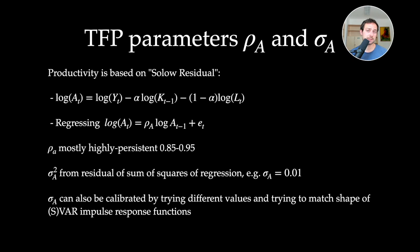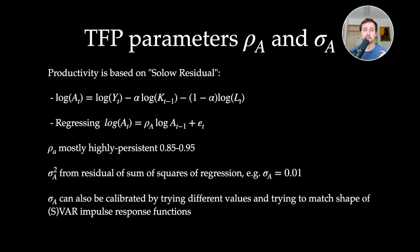For the productivity process parameters — persistence rho and standard deviation sigma — the RBC literature typically looks at the Solow residual using the Cobb-Douglas production function. With data on output, capital, and labor, we can run a regression to get predicted values for the technology process, and then another regression to get the persistence parameter rho. For sigma, you need to be careful as it has implications for the dynamics of your model — impulse response functions, simulations, and so on.